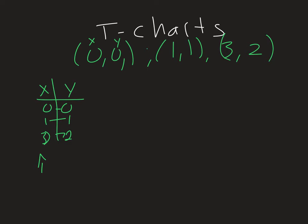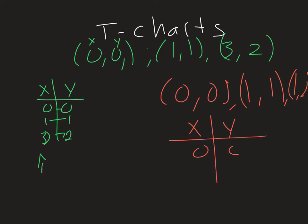Now one example where it's not necessarily a function would be if I have, let's start with 0, 0 again as an ordered pair. I'll do 1, 1, and then I'll do 1, 2. If I make my t-chart again, 0, 0, 1, 1, 1, 2, well, I've got a problem here. I have two x's that repeat, and then I have two y values.